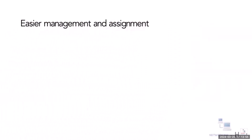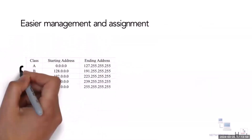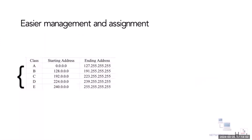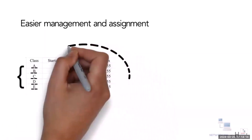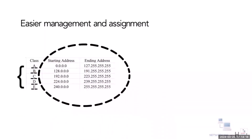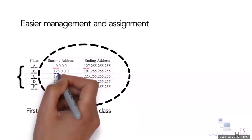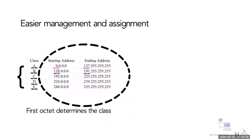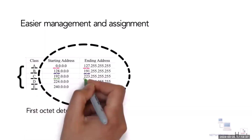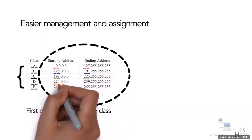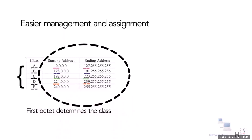For easier management and assignment, IP addresses are organized in numeric order and divided into five classes: Class A, Class B, Class C, Class D, and Class E. Each class has a range of valid IP addresses, and the value of the first octet determines the class. For example: 0 to 127 is Class A, 128 to 191 is Class B, 192 to 223 is Class C, 224 to 239 is Class D, and 240 to 255 is Class E.